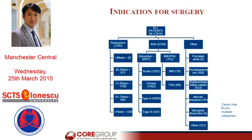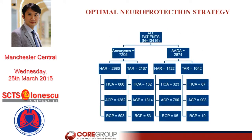From this database, we'll be able to look at the indication of surgery. We can look at aneurysm patients — about 7,000 patients had aneurysm disease — and 6,000 patients had acute aortic syndrome, giving us quite a large number for each category. We can work out what is the optimal neuroprotection strategy for patients having aneurysm disease or acute aortic syndrome, for hemi-arches and total arches respectively, utilizing deep hypothermia alone, deep hypothermia with selective antegrade, or retrograde cerebral perfusion.